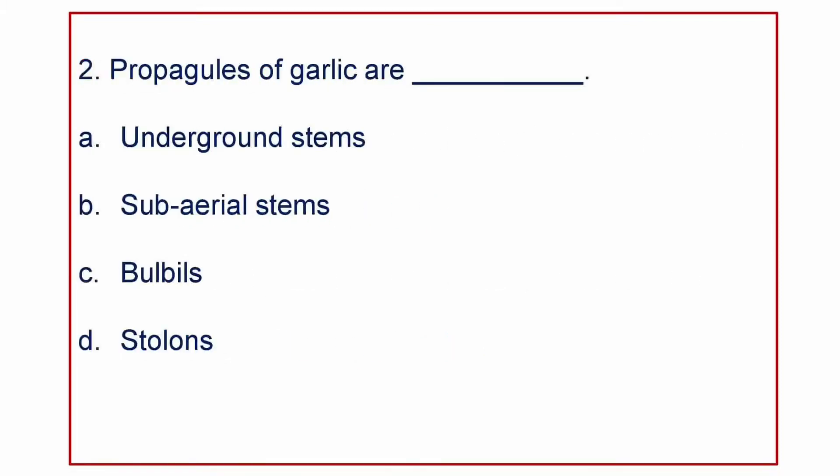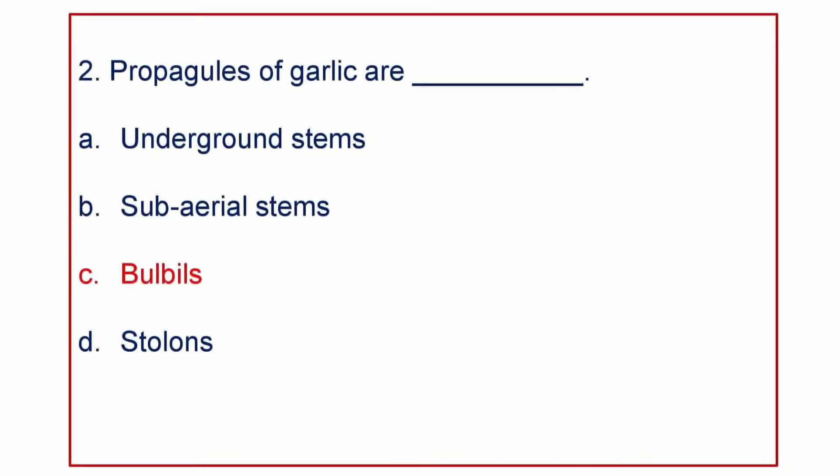Next question: Propagules of garlic are — A) Underground stems, B) Aerial stems, C) Bulbils, or D) Stolons. The answer is that propagules of garlic are Bulbils.